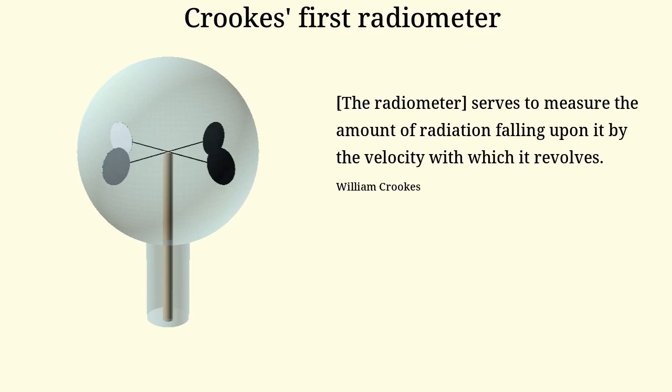When exposed to light or infrared radiation from a heat source, the vanes turn with the white sides leading. He calls this device a radiometer because, as he says, it serves to measure the amount of radiation falling upon it by the velocity with which it revolves.